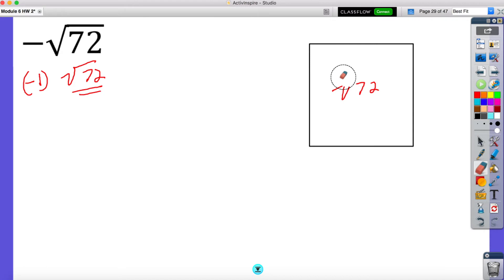So what I need to do is I need to find pairs and then pull them out. So let's go ahead and start with this. The square root of 72, two numbers that multiply to 72 are 8 and 9.